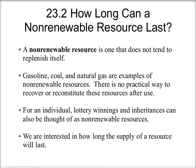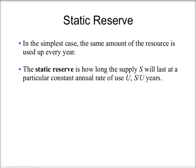We're going to look at how long the supply of a resource will last. First, let's talk about static reserve. In the simplest case, the same amount of the resource is used up every year. The static reserve is how long the supply S of a resource will last at a particular constant annual rate of use U, given by S divided by U years. So the number of years N that the resource will last equals the supply S divided by the constant annual rate of use U.